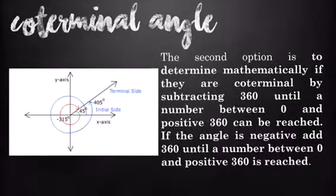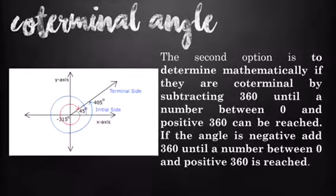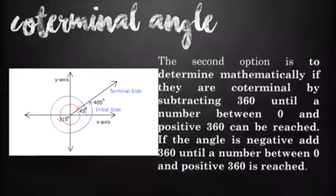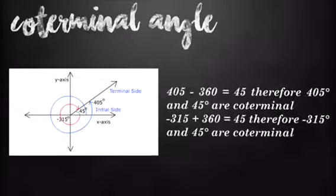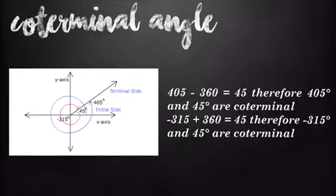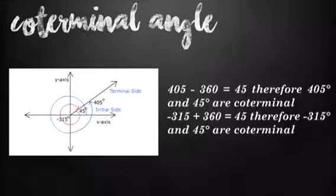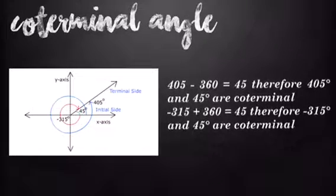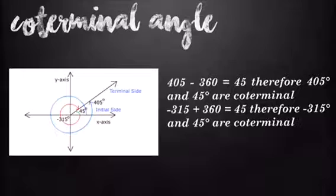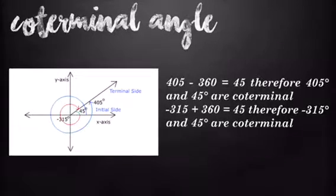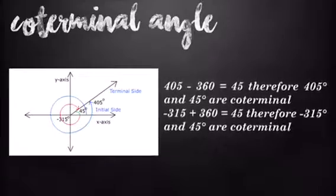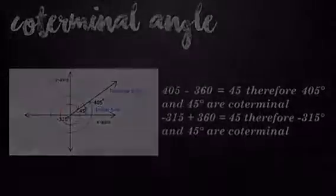If the angle is negative, add 360 until a number between 0 and positive 360 is reached. 405 minus 360 equals 45. Therefore, 405 degrees and 45 degrees are coterminal. Negative 315 plus 360 equals 45. Therefore, negative 315 degrees and 45 degrees are coterminal.